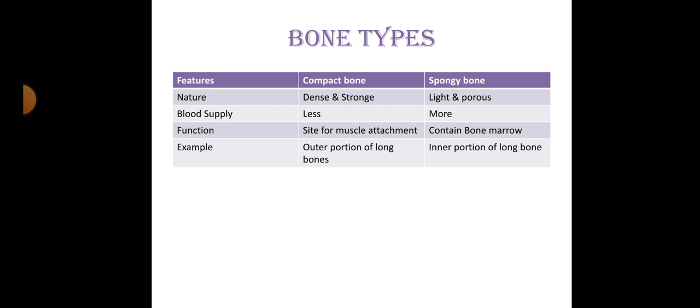Bone types: there are two types - compact bone and spongy bone. Spongy bone, as the name indicates, is porous and sponge-like. Nature: compact bone is dense and stronger, while spongy bone is light and porous. Blood supply to compact bone is less, while spongy bone has more blood supply. Compact bone is present at sites of muscle attachment.